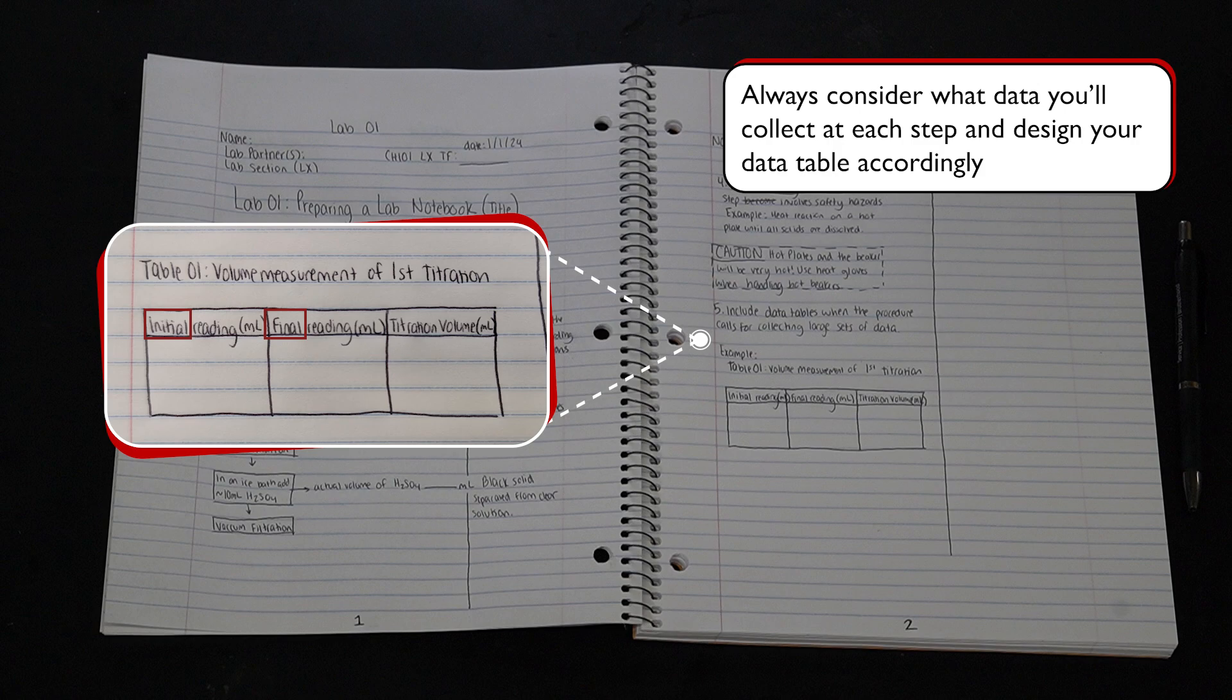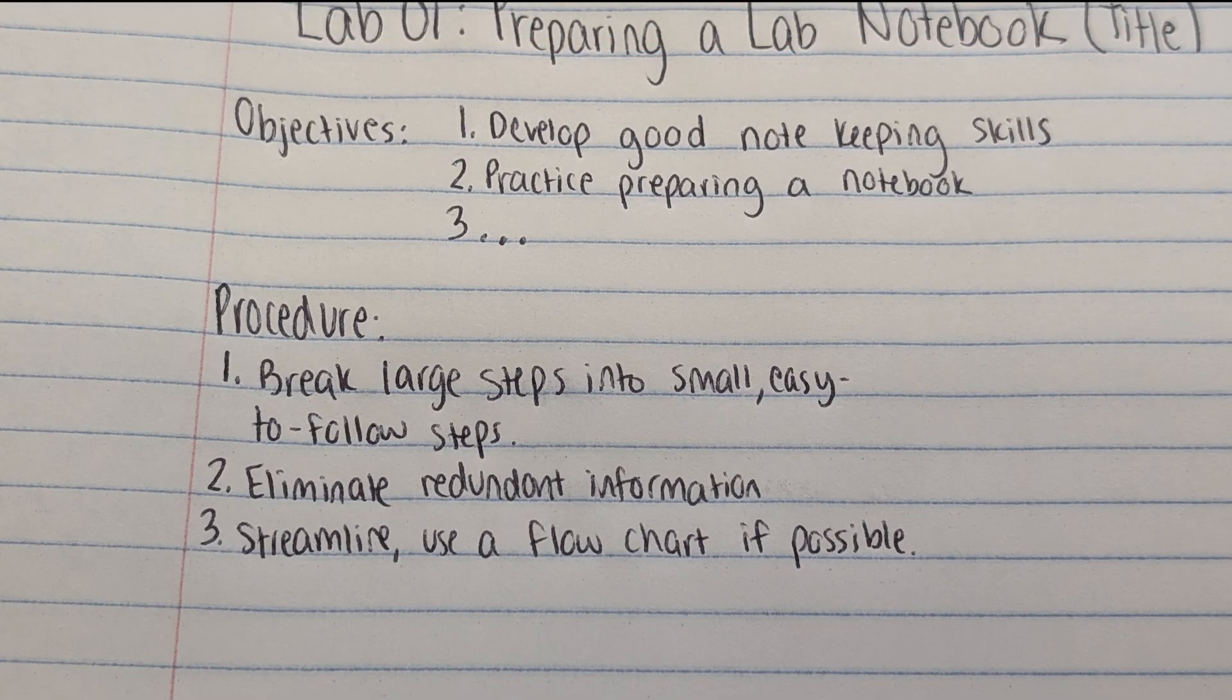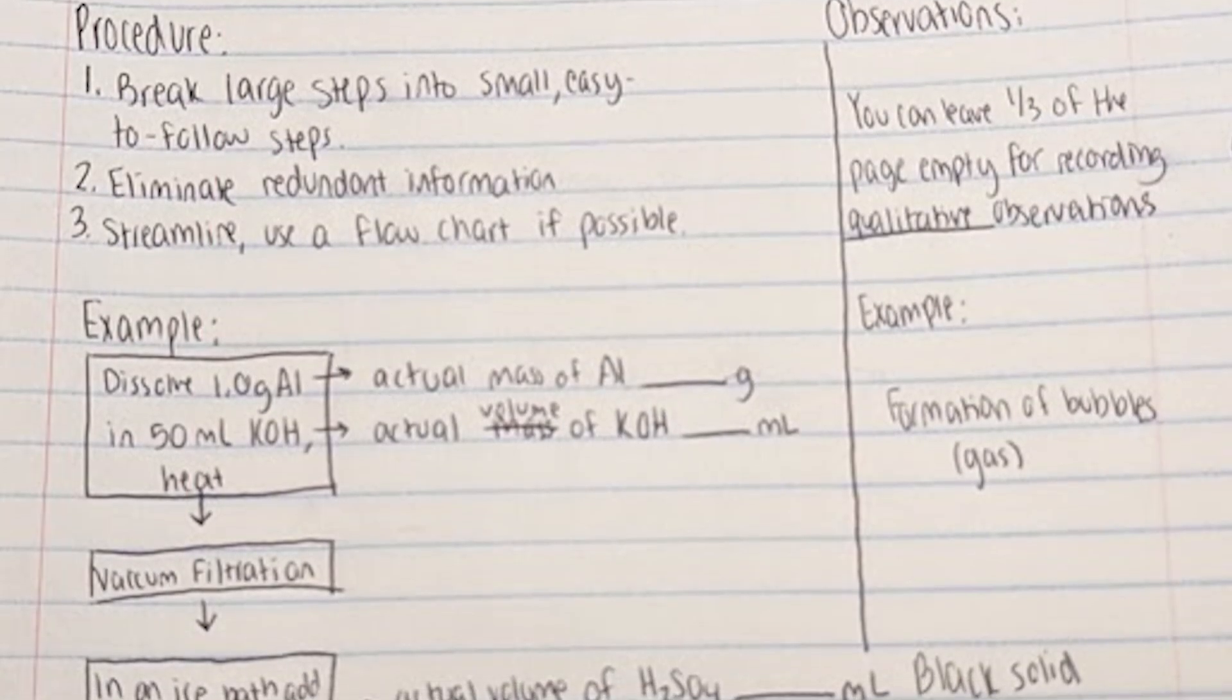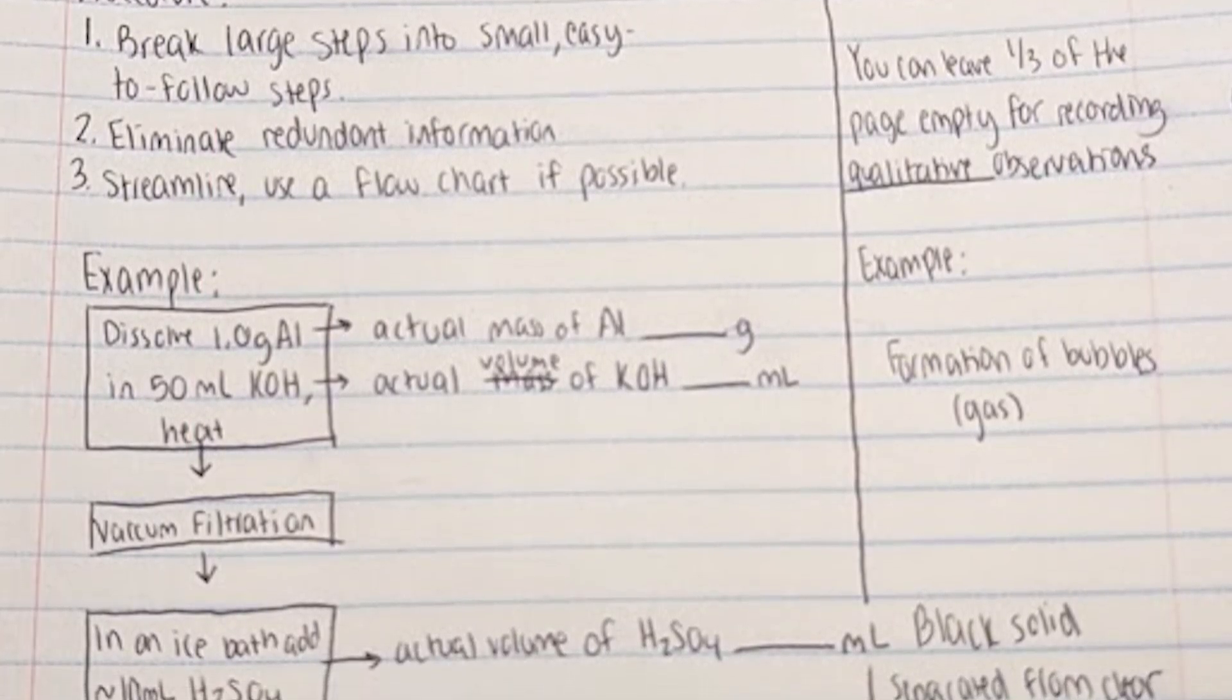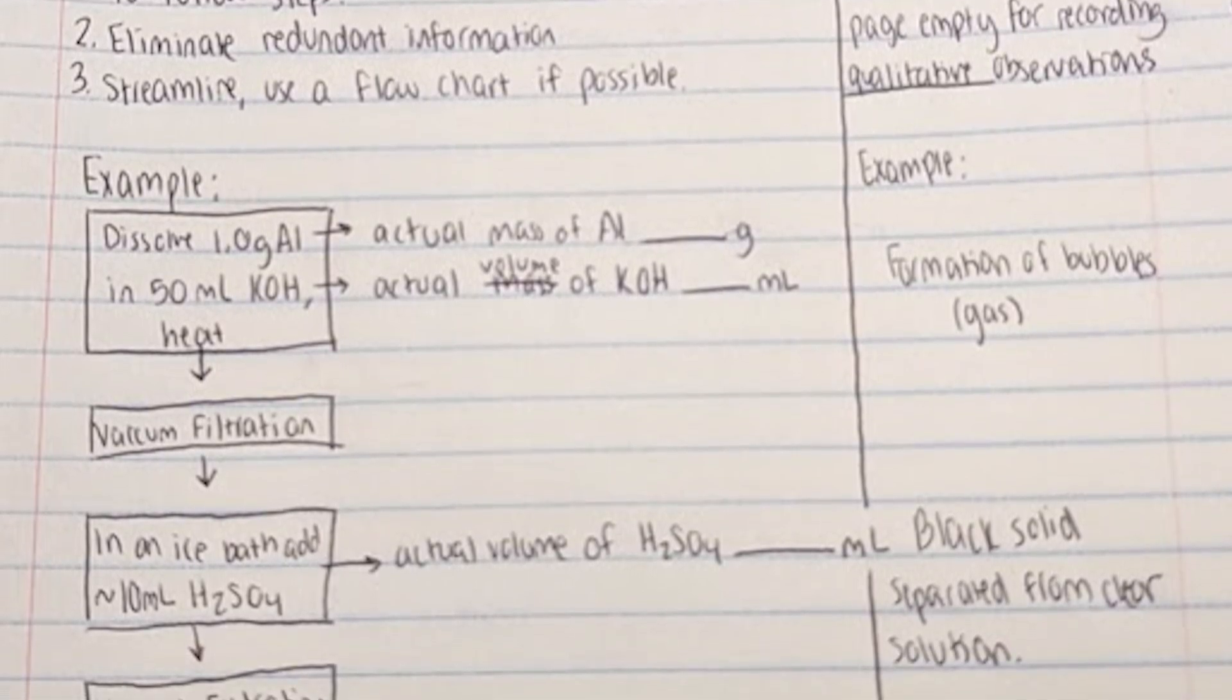Which of the following statements are true about the procedure section of a notebook? Keep in mind that we do not need to copy the procedure word for word. Our goal is to present an informative yet concise procedure so that it is easy to follow during the experiment. Additionally, we should always keep ample space in between steps to record observation and measurements as we are performing the experiment.